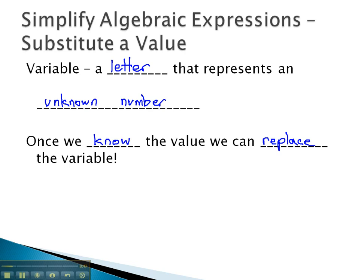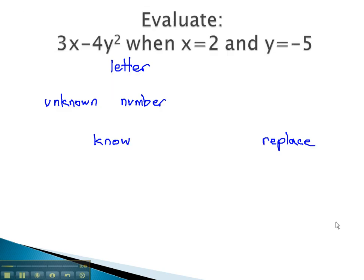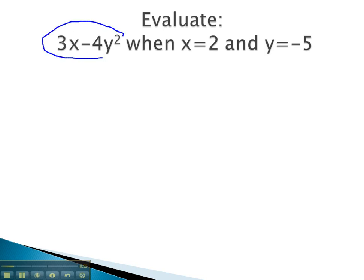Let me show you an example. In this problem, we have this expression 3x minus 4y squared. There's two variables, the x and the y, which are representing unknown numbers. Well, this problem wants us to evaluate when they tell us the x is representing the number 2, and the y is representing the number negative 5.